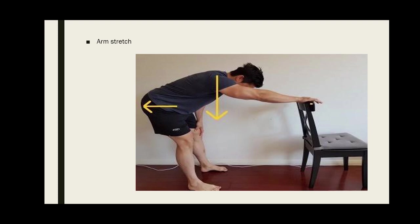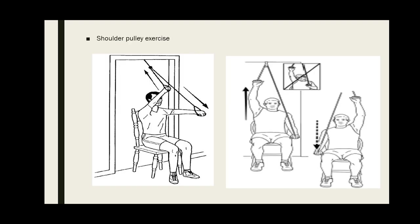In pulley exercises, we normally do shoulder flexion and abduction. Put a chair against the door and sit. Grasp the pulley handles with both hands. Pull down the pulley with the good arm. This will lift your injured arm up over your head. Lift as high as you can, hold for a few seconds, then relax. This is shoulder flexion.